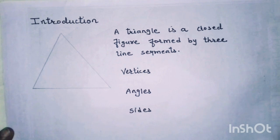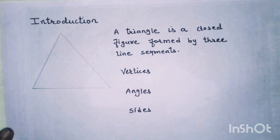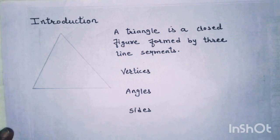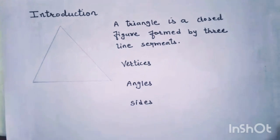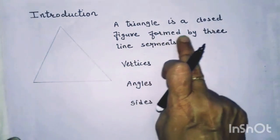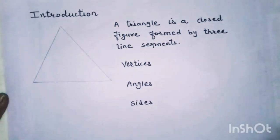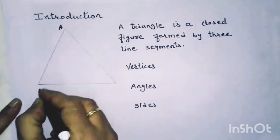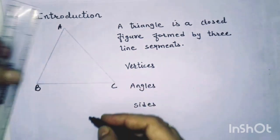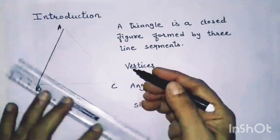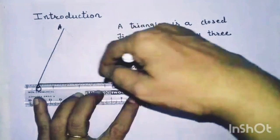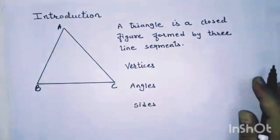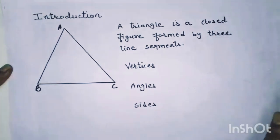Now in this chapter, The Triangle and its Properties, first I will explain and let us revise whatever you have learnt in your earlier class about a triangle. All of you know that a triangle is a closed figure formed by 3 line segments. Suppose if I am writing over here A, this is B and this is C. So line segment AB, line segment BC and line segment CA are the 3 sides of the triangle.